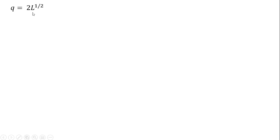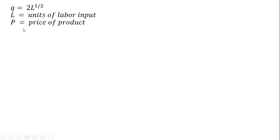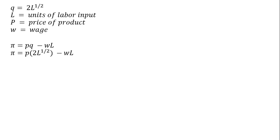Here we have a firm's production function. We're going to look at this in the short run where capital is fixed. The quantity of output equals 2 times the square root of labor: Q = 2√L. L is units of labor, P is the price of the product, W is the wage, and profit equals revenue minus cost. We're ignoring fixed cost here.